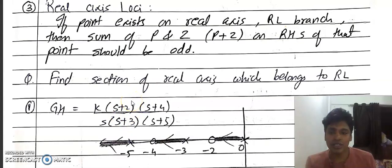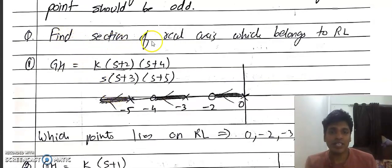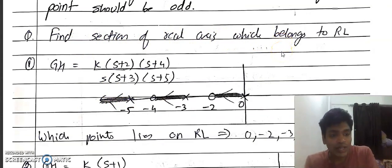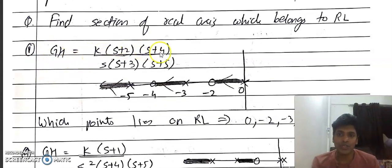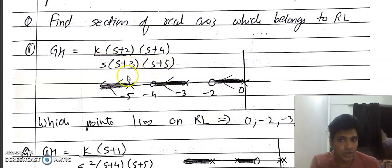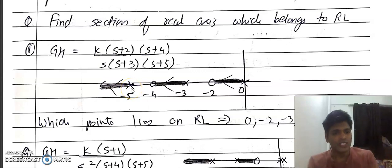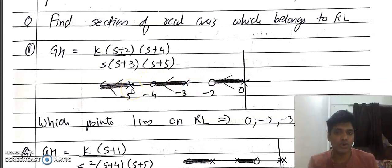Let's explain with an example: find the section of real axis which belongs to the root locus. Consider GH = s(s+2)(s+4) / [s(s+3)(s+5)]. Poles are at s=0, s=−3, s=−5 (marked with crosses). Zeros are at s=−2, s=−4 (marked with hollow circles). Between 0 and −2, standing at any point and looking right, there is one pole to the right — one is odd, so this section lies on the root locus.